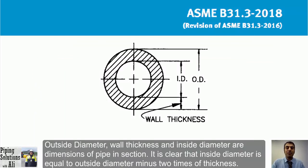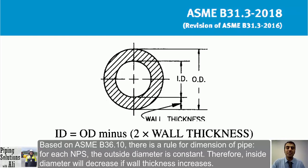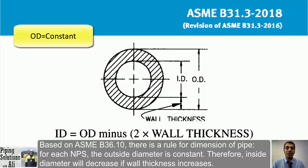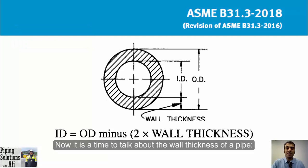Outside diameter, wall thickness, and inside diameter are the key dimensions of a pipe cross-section. Inside diameter equals outside diameter minus two times the wall thickness. According to ASME B36.10, for each NPS the outside diameter is constant. Therefore, inside diameter decreases as wall thickness increases.